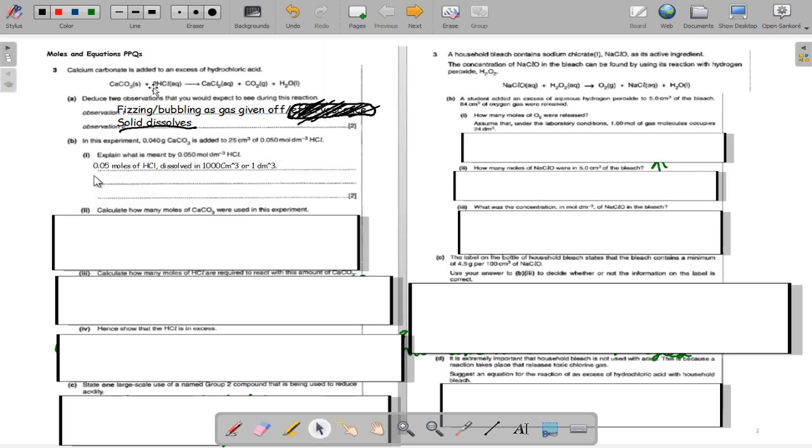I kind of gave it away. 0.05 moles of hydrochloric acid dissolved in 1000 cm³ or 1 decimeter cubed. You can also put this is the concentration.